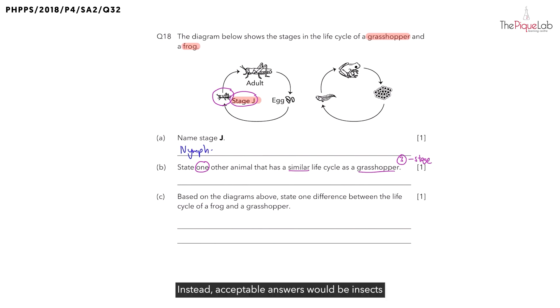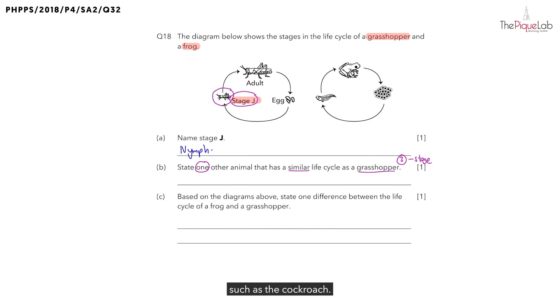Instead, acceptable answers would be insects with a three-stage life cycle, such as the cockroach.